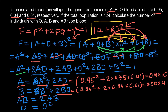For blood group AB, we calculate 2 × 0.95 × 0.04, giving a frequency of 0.076.